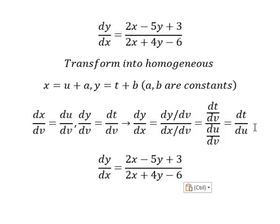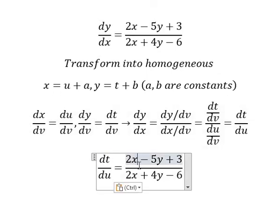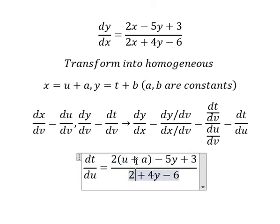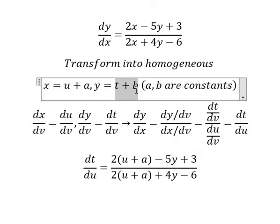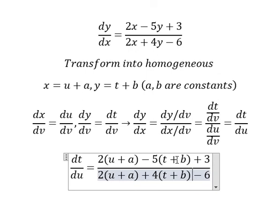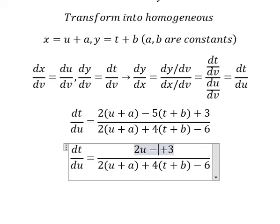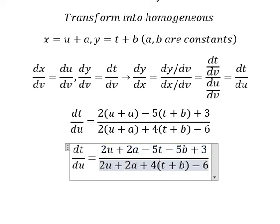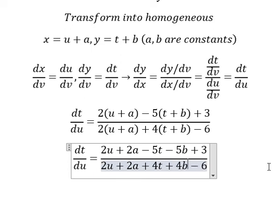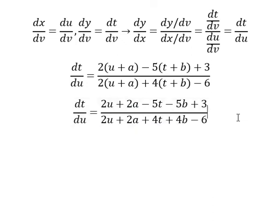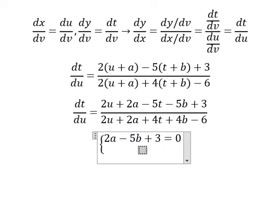Now I will substitute x and y back. We change x by u plus a and y by t plus b, then expand. If we want to create homogeneous, the value of the constant terms should equal zero. That means 2a minus 5b plus 3 equals zero, and 2a plus 4b minus 6 equals zero.